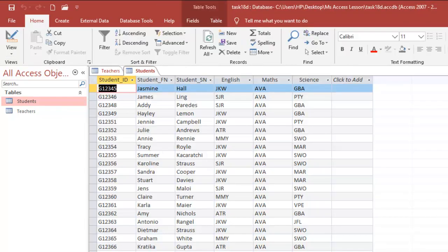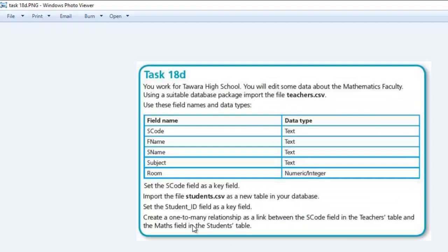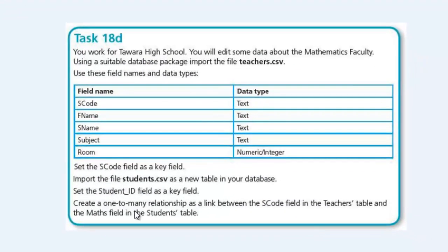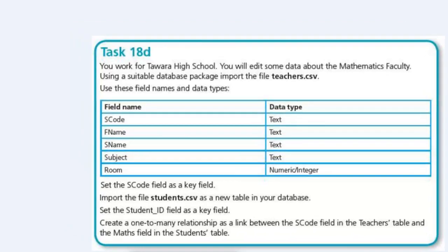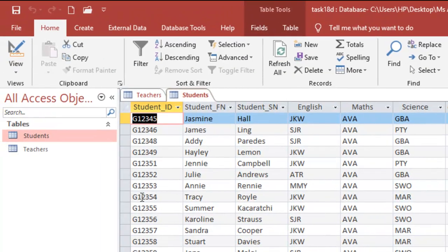Finally, the last question is to create a one-to-many relationship. This is where we create a relation between the two tables. We need to create a one-to-many relationship as a link between the s_code field in the teachers table and the math field in the student table.